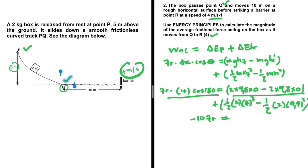The potential energy terms give zero, so we're left with the change in kinetic energy, which gives −82.01. Dividing both sides by −10, we again get F_friction = 8.2 N. So you can use either the work-energy theorem or the work done by non-conservative forces equation when the question says 'use energy principles.'